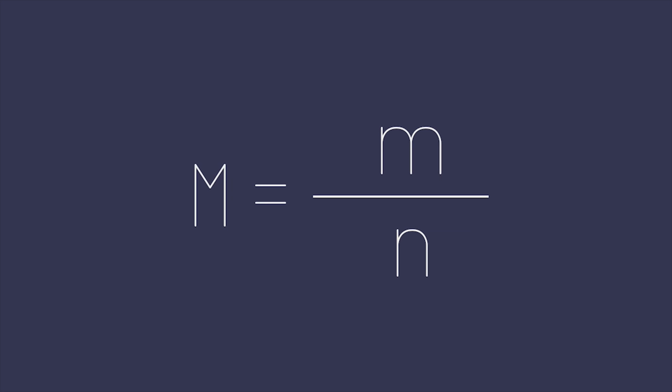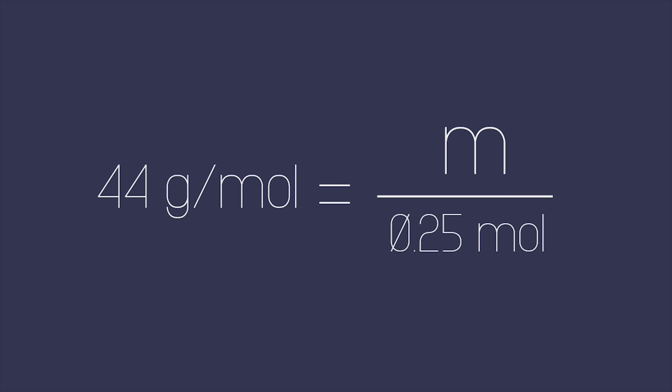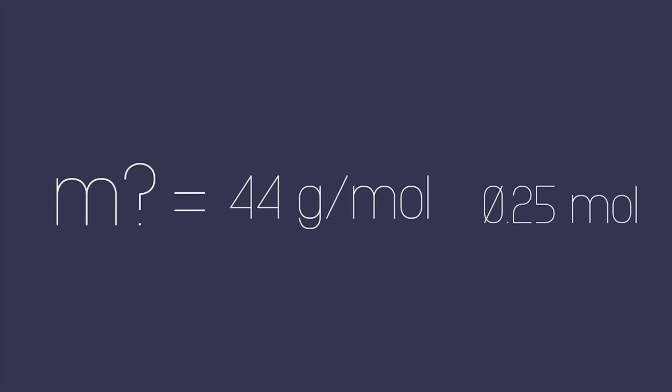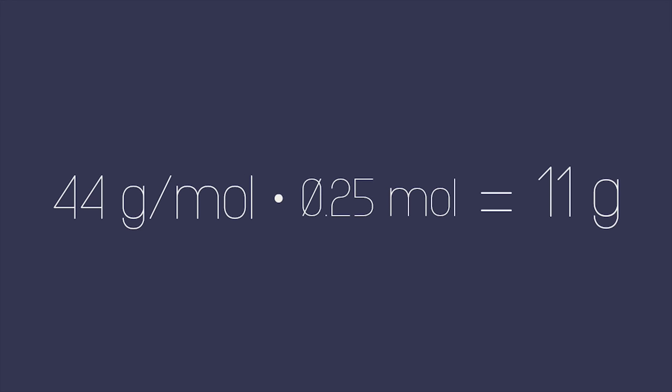Then use this formula. Substitute the letters with the numbers that you have to work out the mass of carbon dioxide that is produced. So the mass of carbon dioxide which escapes is 0.25 moles times 44 grams per mole, which equals 11 grams.